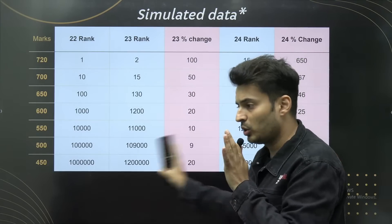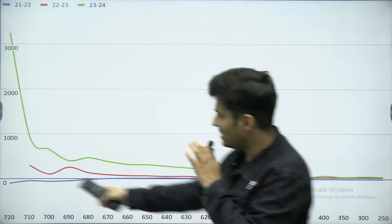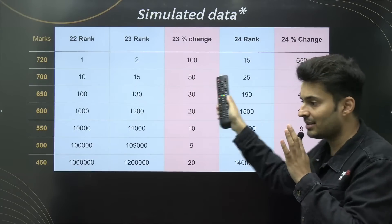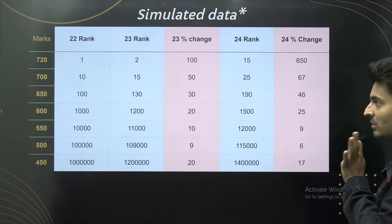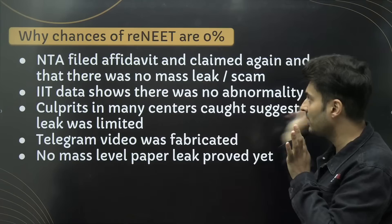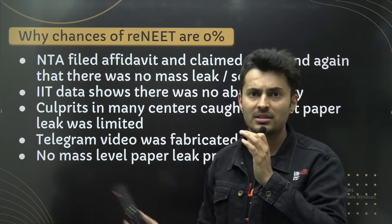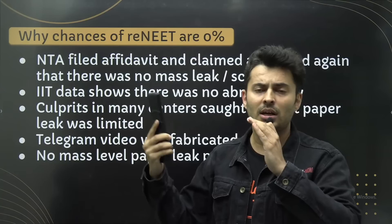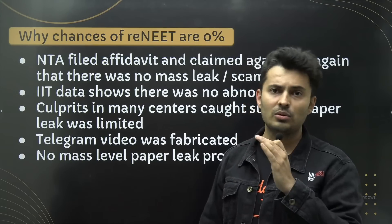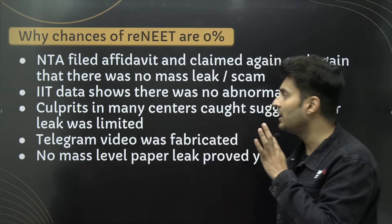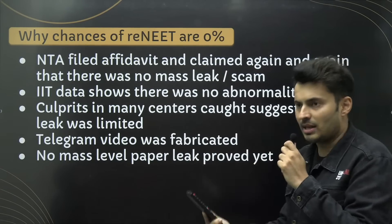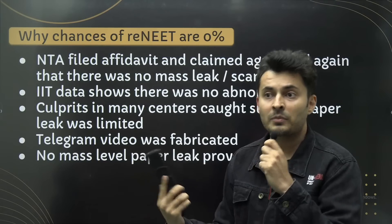I hope this matter is put to rest. Just because you see this graph shooting up does not prove anything — it is normal because a small change in the top ranks leads to a massive percentage change. Keep that in mind. Now, what are the chances of re-NEET? It is 0%. Because NTA clearly filed an affidavit saying there was no mass leak or scam. They have no intentions — if they had intentions like they did for UGC-NET and CSIR exams, they would have already announced it. IIT data shows there was no abnormality. Culprits were caught, so to some extent, the majority of people are now scared to do something similar.